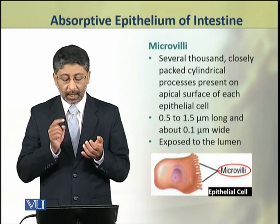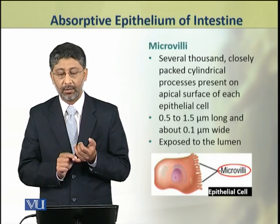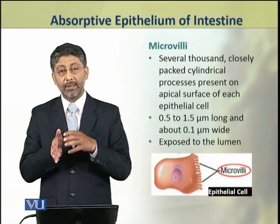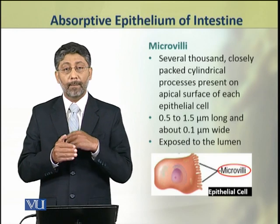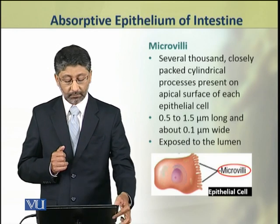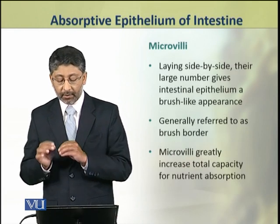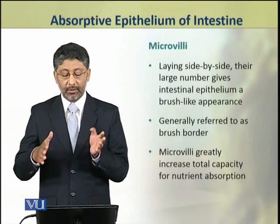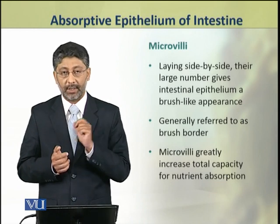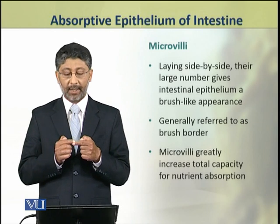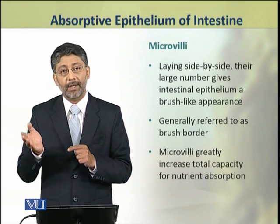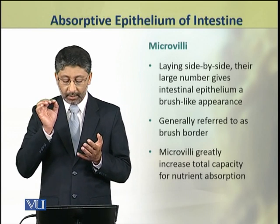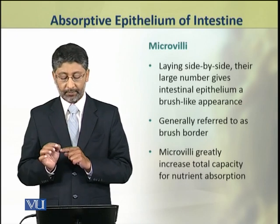Each microvillus is about 0.5 to 1.5 micrometers long and about 0.1 micrometers wide. These are structures of the epithelial cells that form the absorptive surface, increasing it thousands of times. This is why there is a special term used for the intestinal lining: brush border — because of the presence of microvilli. The microvilli increase the total capacity for nutrient absorption.